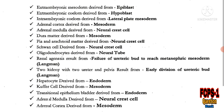Hepatocytes are derived from endoderm. Kupffer cells, which are macrophages in the liver, are derived from mesoderm. So Kupffer cells are from mesoderm and hepatocytes are from endoderm.